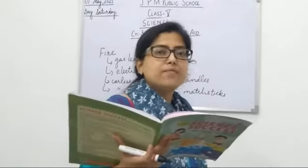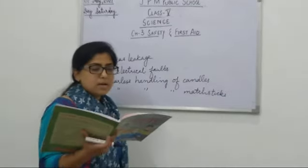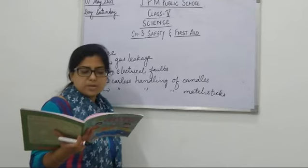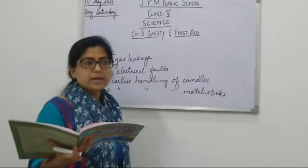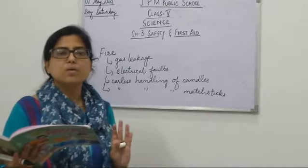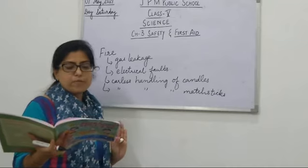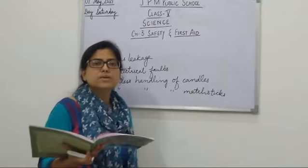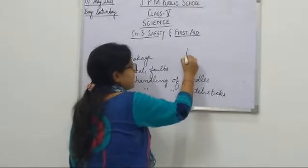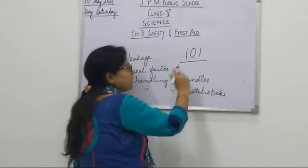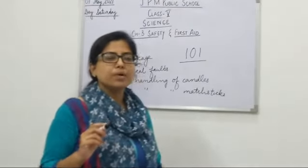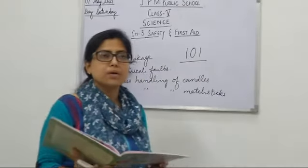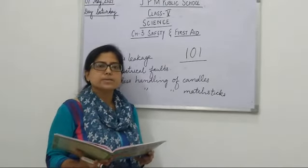Fire can be put out by the following methods. Number one: in case of a fire accident, immediately call adults for help and inform the fire station. The emergency number of a fire station is 101. In case of a small fire, use fire extinguishers to put it out.